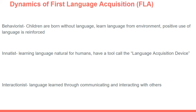A second perspective is the innatist perspective. This theory says that learning a language is natural for humans, and that humans have a tool called the language acquisition device — a process of the brain that facilitates language learning. An interactionist approach argues that language is learned primarily through communicating and interacting with others — with peers, family members, and caregivers.